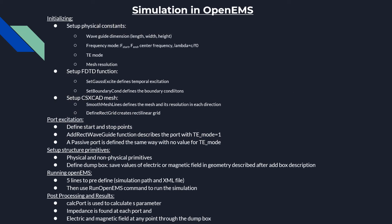The first step to performing the simulation is initialization, which consists of three main steps. The first involves setting up the simulation parameters, that is the dimensions of the waveguide. The second involves setting up the FDTD function, which is related to temporal excitation and boundary conditions. The last involves initializing the mesh that describes the whole structure using the setup CSXCAD mesh function.